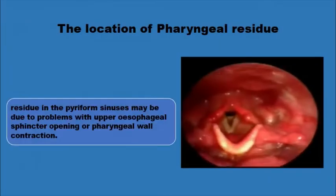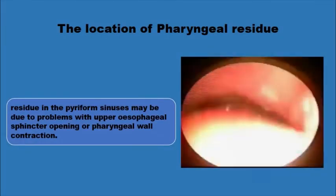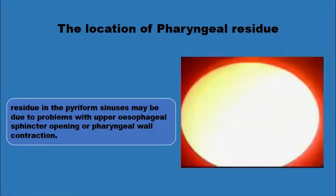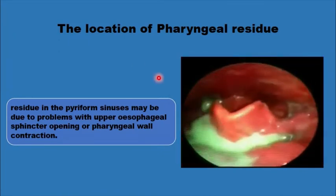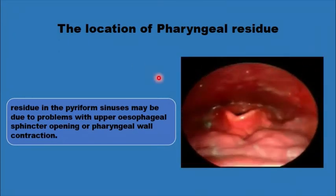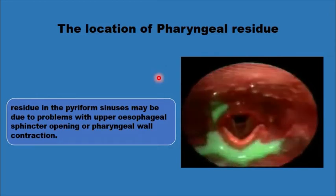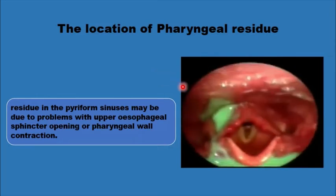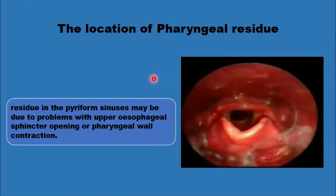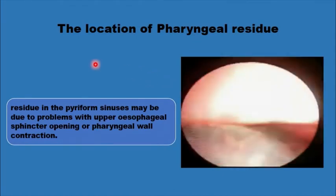The location of any bolus residual parts in the hypopharynx is noted. In cricopharyngeal dysfunction, you would expect to see pharyngeal residue in the lower part of the hypopharynx, just above the level of the cricopharyngeus sphincter.